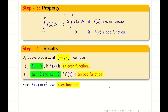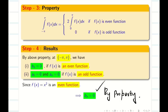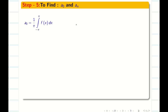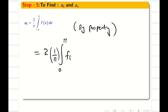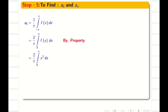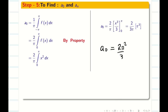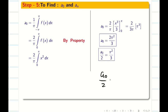f(x) = x² is obviously an even function. Therefore by the above property, bₙ = 0, which saves time. Now we only need to find aₙ and a₀. For a₀, by property we write 2 × (1/π) ∫₀^π x² dx. Integrating gives x³/3 from 0 to π. Substituting the limit, a₀ = 2π²/3, and importantly a₀/2 = π²/3.